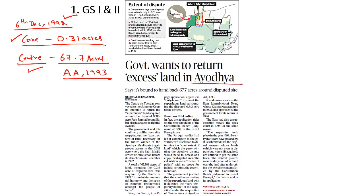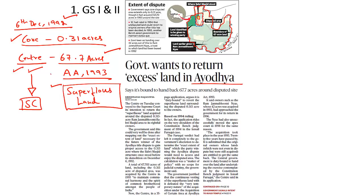Since then, the government has held possession of around 67.7 acres of land around the disputed Ayodhya site, as marked on this map from 1993. The center has now requested the Supreme Court to return this adjacent — also termed superfluous — land acquired through the Ayodhya Act of 1993, showing its intention to return the acquired land to the original owners.